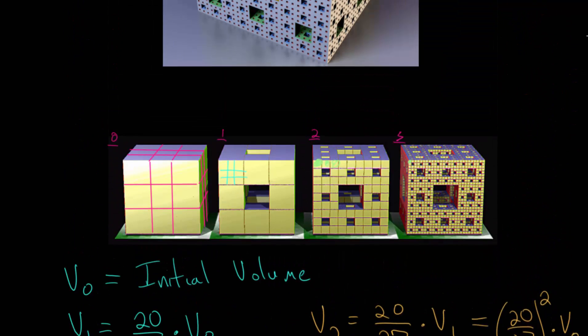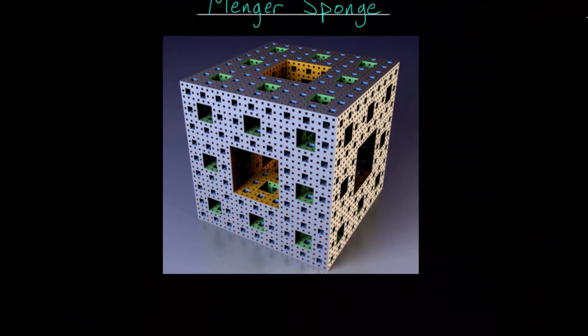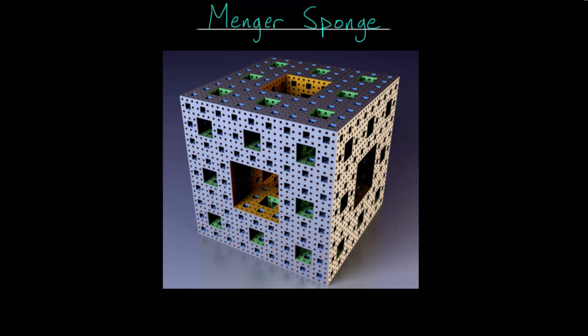So in the limit as n goes to infinity, the volume of this Menger sponge is equal to 0. The volume of this fractal, when the number of steps is carried out to infinity, is equal to 0.